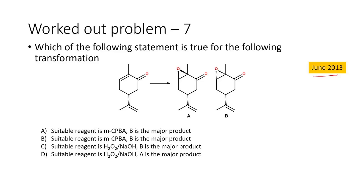Let us move on to the next problem, which appeared in June 2013. Again we have a very similar reaction — an alpha-beta unsaturated system. Here the question addresses the stereochemistry of the product formed. The options are: (A) MCPBA with B as major product; (B) MCPBA with A as major product; (C) hydrogen peroxide and sodium hydroxide with B as major product; (D) hydrogen peroxide and sodium hydroxide with A as major product. Since this is an alpha-beta unsaturated system requiring nucleophilic/basic conditions, MCPBA is ruled out, and our answer is between C and D.